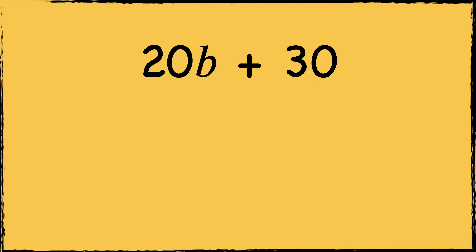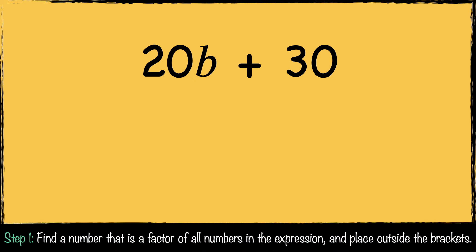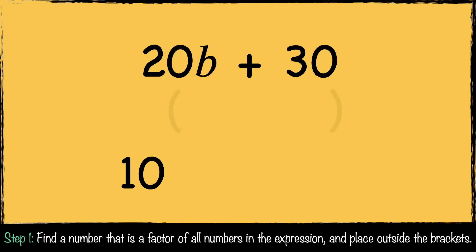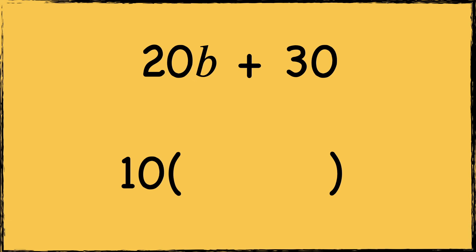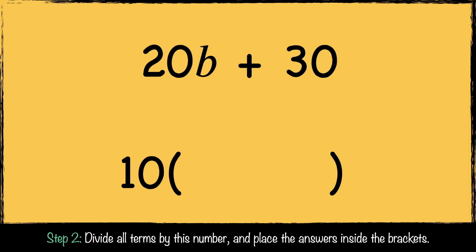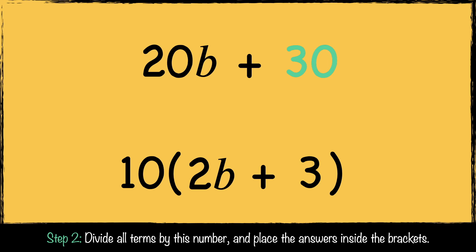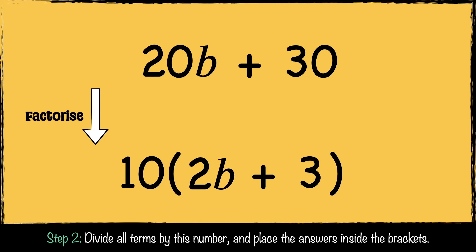Here's the next example: 20b + 30. We need to find a factor of the terms in this expression. 10 is a factor of both 20 and 30, so we put 10 in front of the brackets. Now we divide our terms by 10: 20b divided by 10 is 2b, and 30 divided by 10 is 3. So this expression can be factorized to 10(2b + 3).